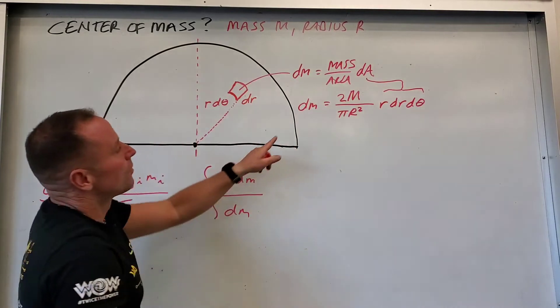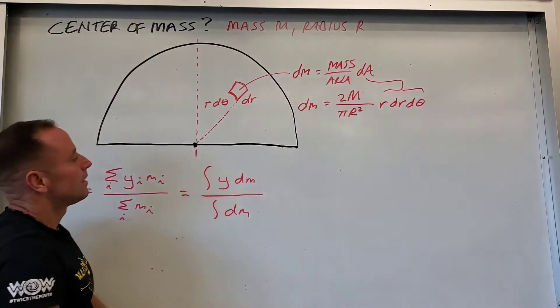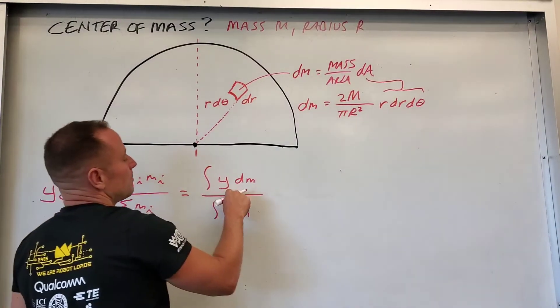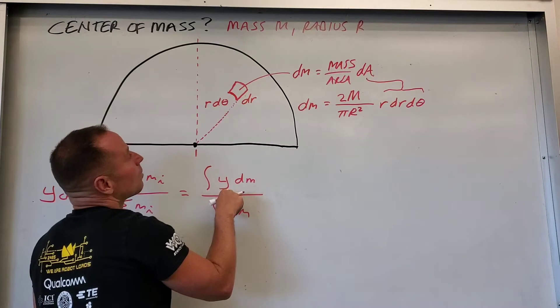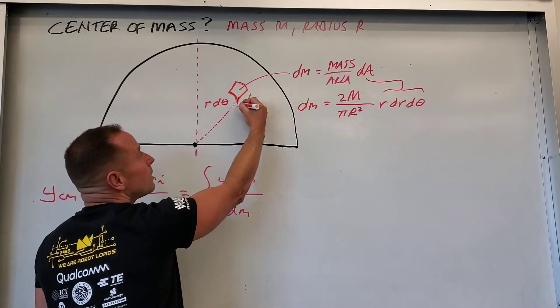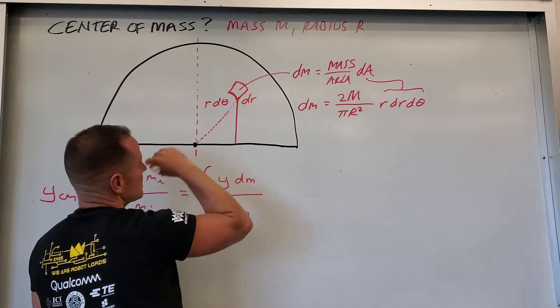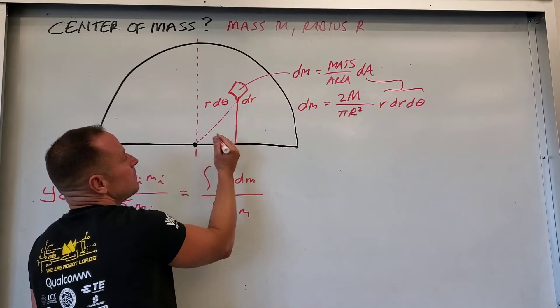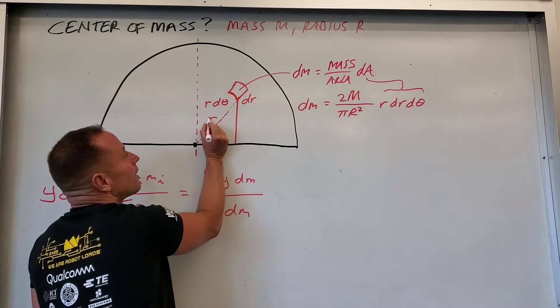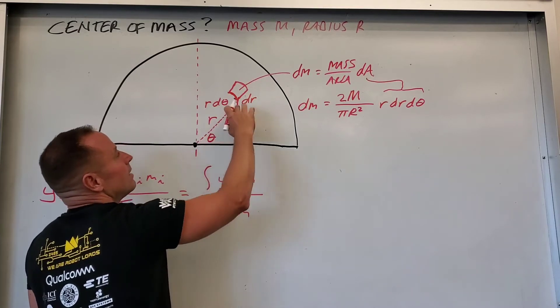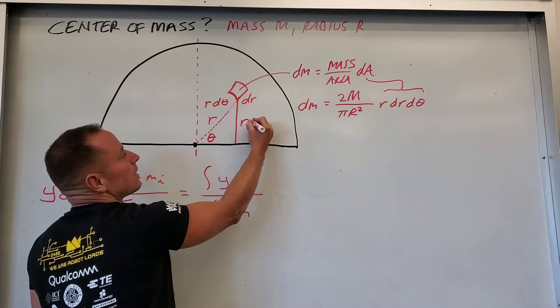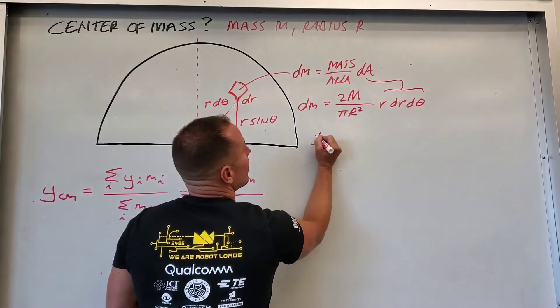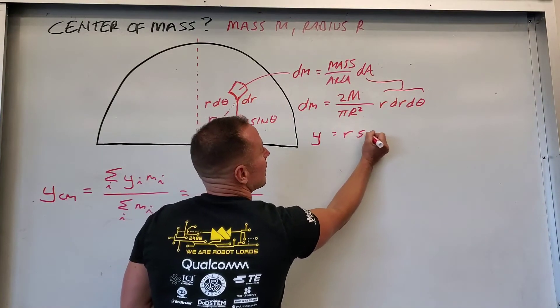That's going to go in for dm. Now our little bit of our y coordinate here, that's how far up this chunk of mass is, so this distance here. And what that guy is going to be is if this is r and this angle is θ, then this y coordinate is going to be r sin θ. So your y coordinate is going to be r sin θ.